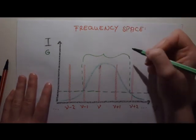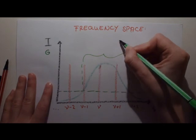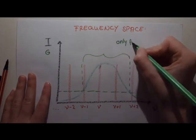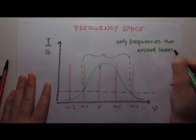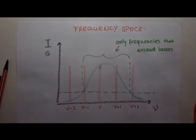If you change the gain threshold, so the conditions at which lasing occurs, you can actually control the number of modes in the intensity distribution. Also note the distance between two modes on the screen.